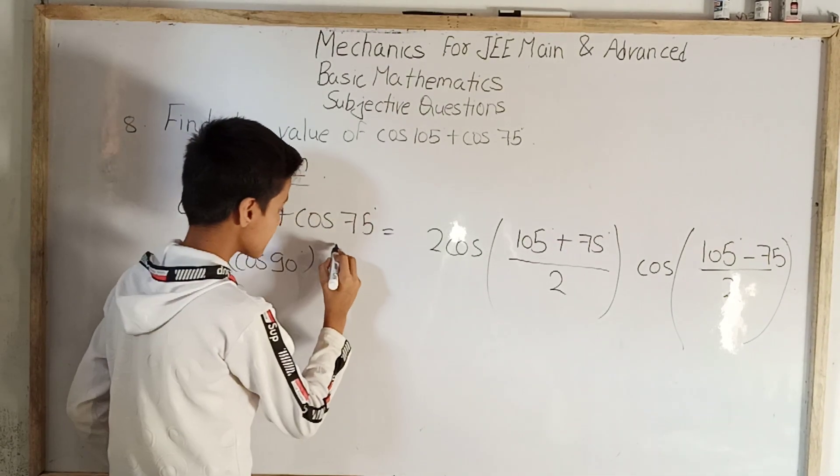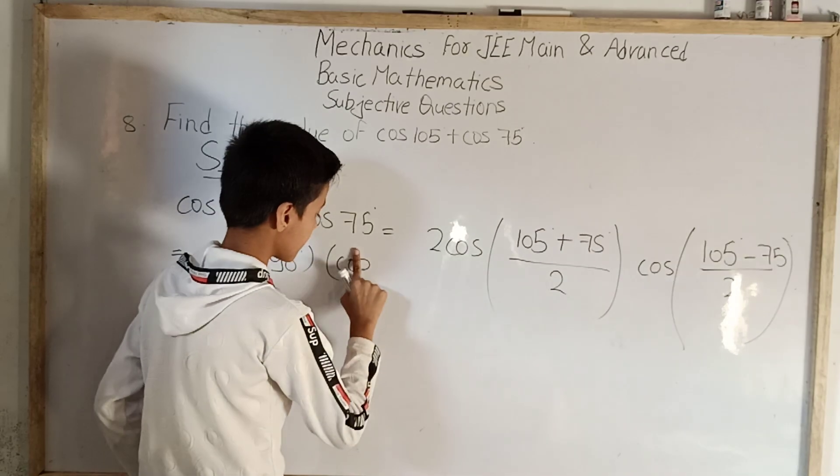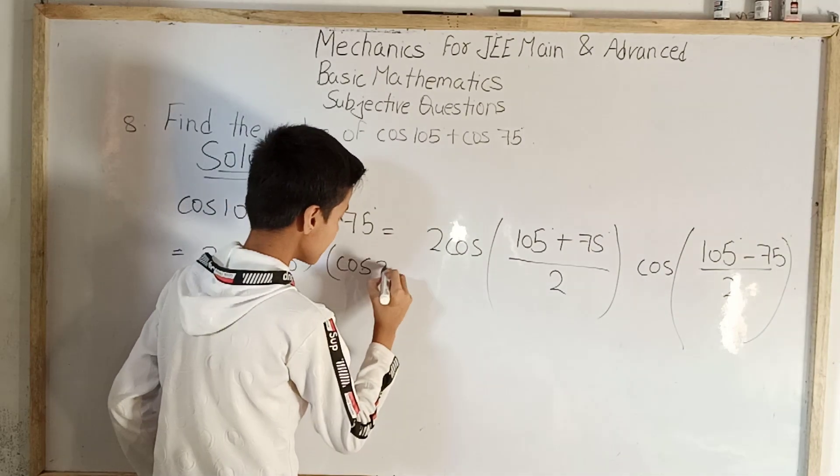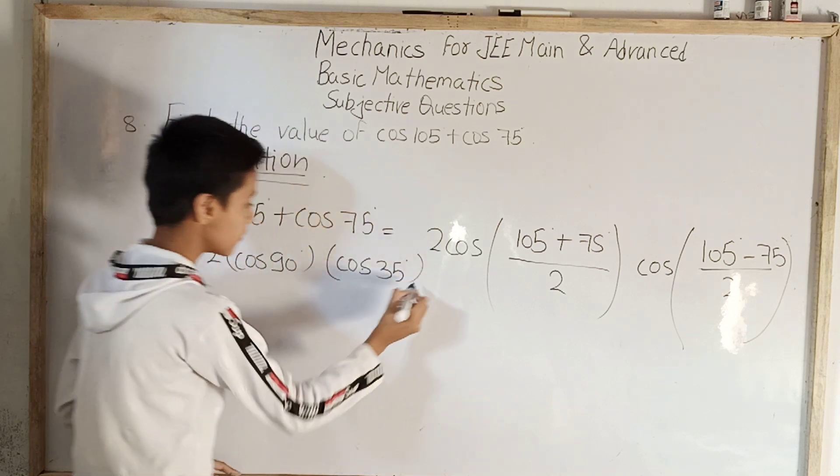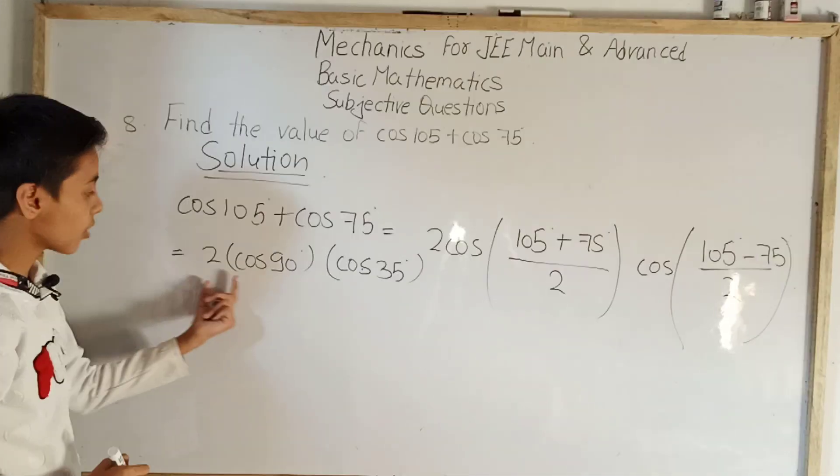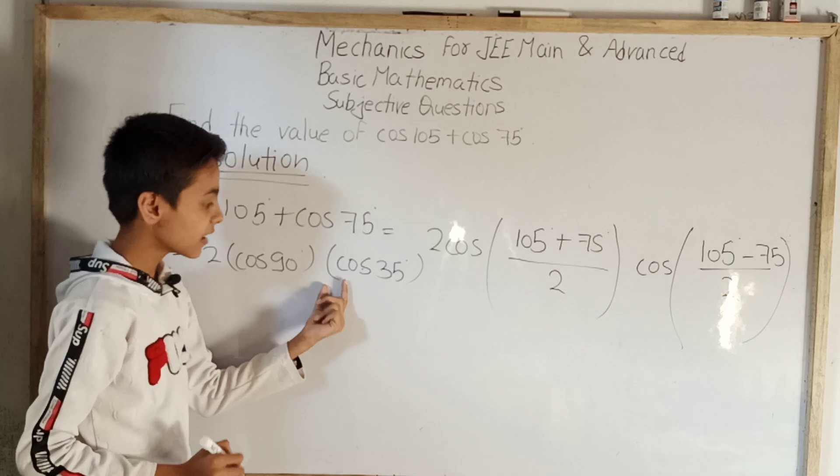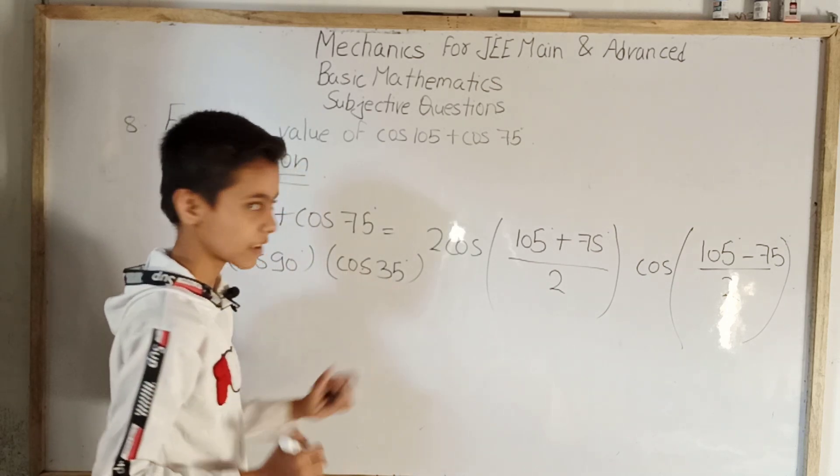Bracket close, then again bracket cos 35 degree. Finally we got 2 bracket cos 90 degree bracket close, now again bracket cos 35 degree.